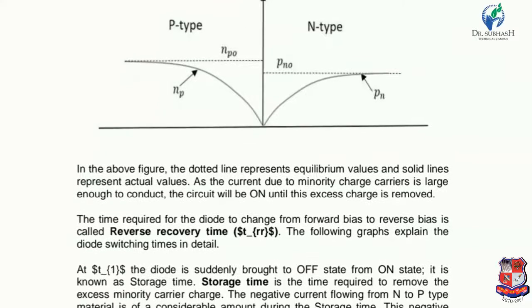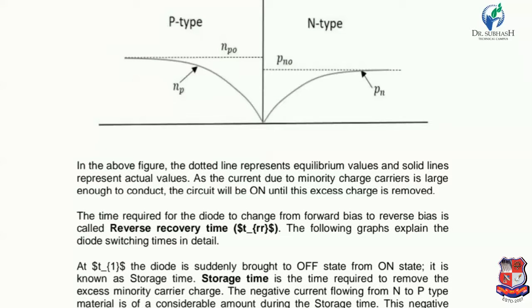In the above figure, the dotted line represents equilibrium values and the solid line represents actual values. The time required for the diode to change from forward bias to reverse bias is called reverse recovery time. When the diode is suddenly brought to off state from on state, this is known as storage time. Storage time is the time required to remove the excess minority charge carriers from near the junction.